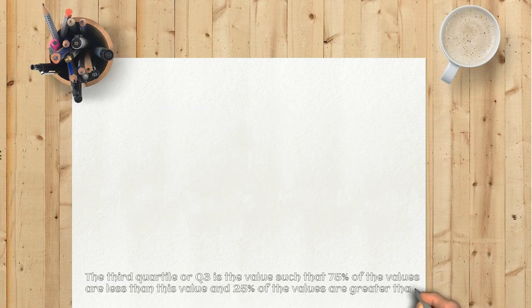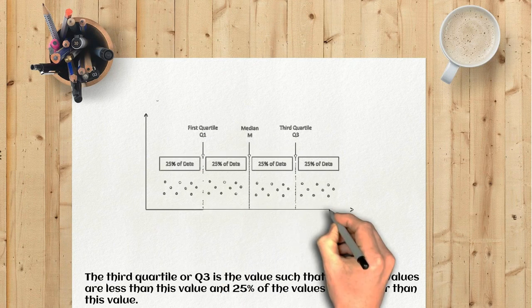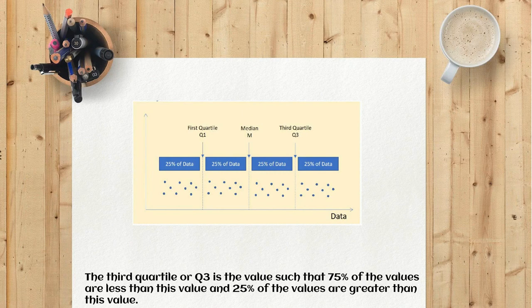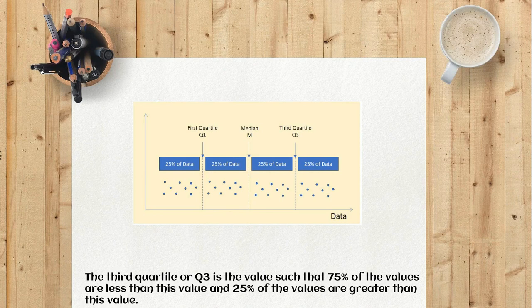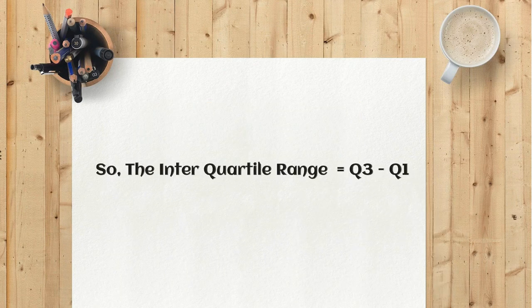The third quartile, or Q3, is the value such that 75 percent of the values are less than this value and 25 percent of the values are greater than this value. So the interquartile range equals Q3 minus Q1.